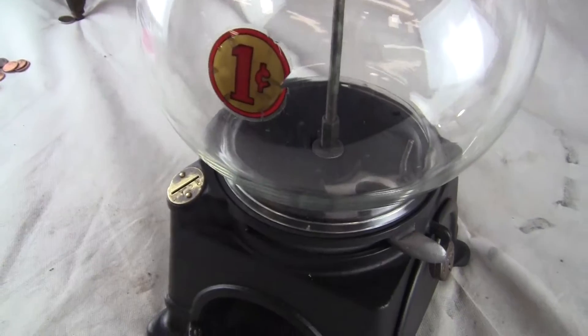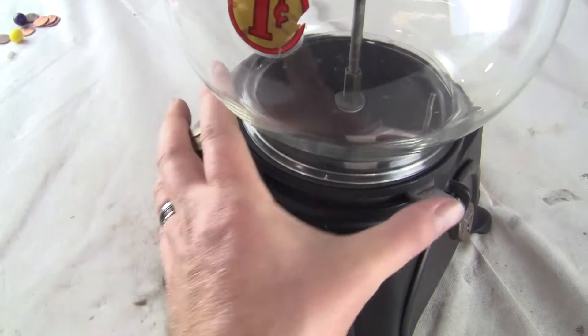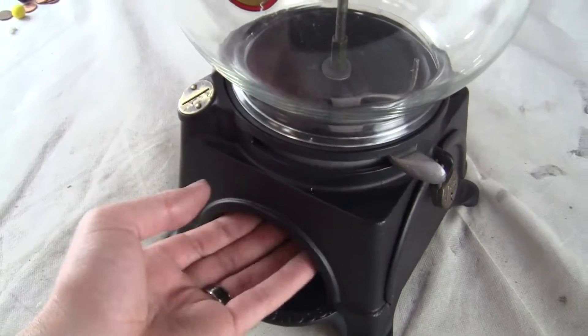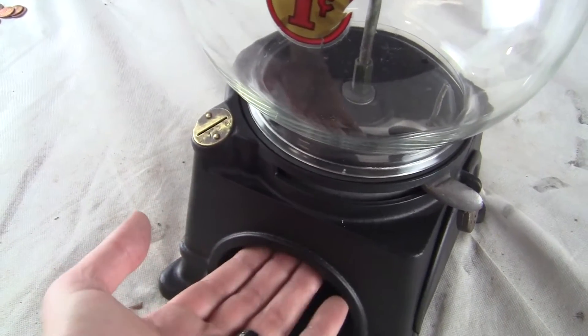All you do is take a penny, insert it into the slot, pull the lever from back to front and release. It snaps back into position and you would get your gum candy dispenses down below.